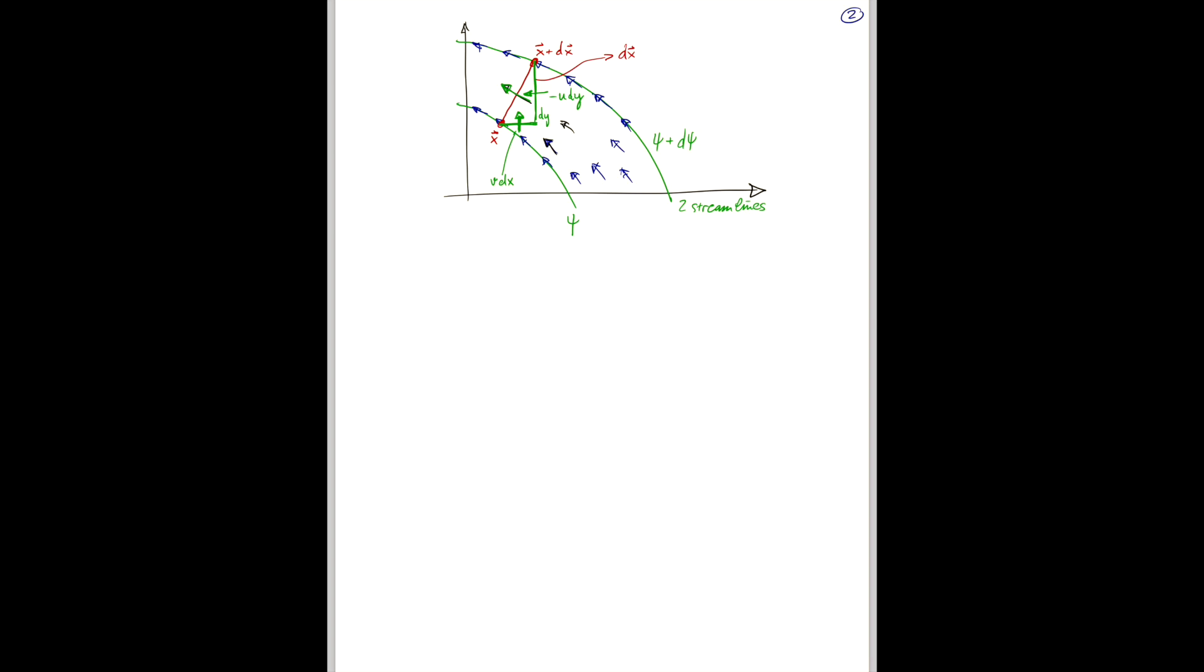And the flux flowing in the vertical is the vertical component times the line segment perpendicular to that vertical component. So, it's v dx. So, really, v dx plus minus u dy is simply minus d psi dx times dx minus d psi dy times dy equals minus d psi.